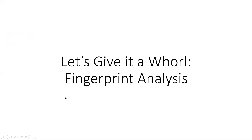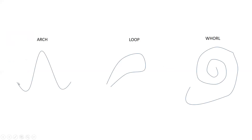So let's talk about the three main categories for types of fingerprints you will see. Those patterns are that of an arch, a whorl, and a loop. Now let's look at the three characteristic shapes — let's give it a whirl, fingerprint analysis. So in general you will either see an arch, a loop, or a whorl.